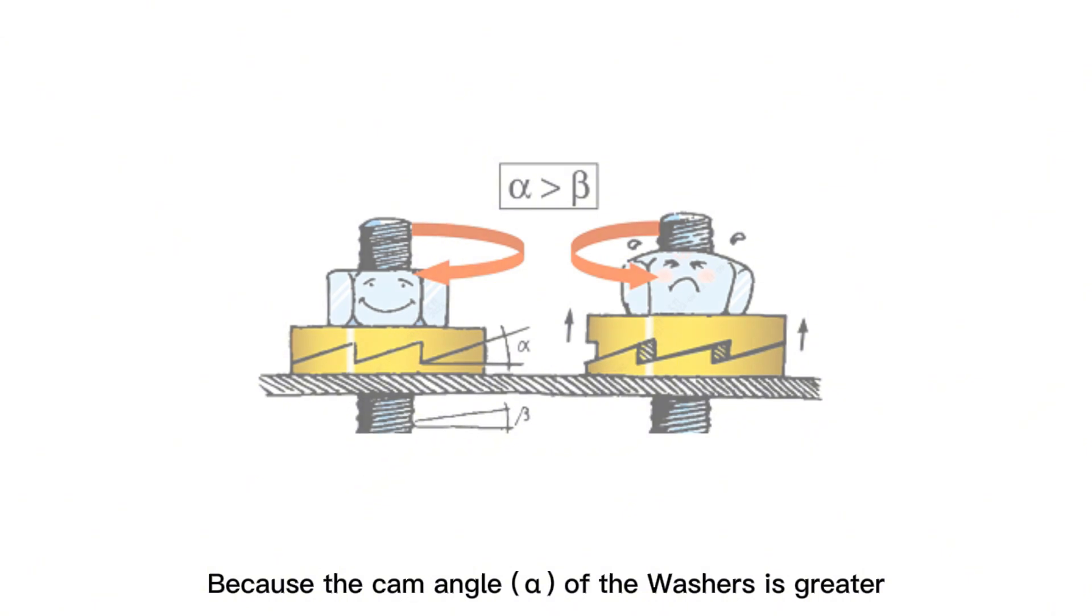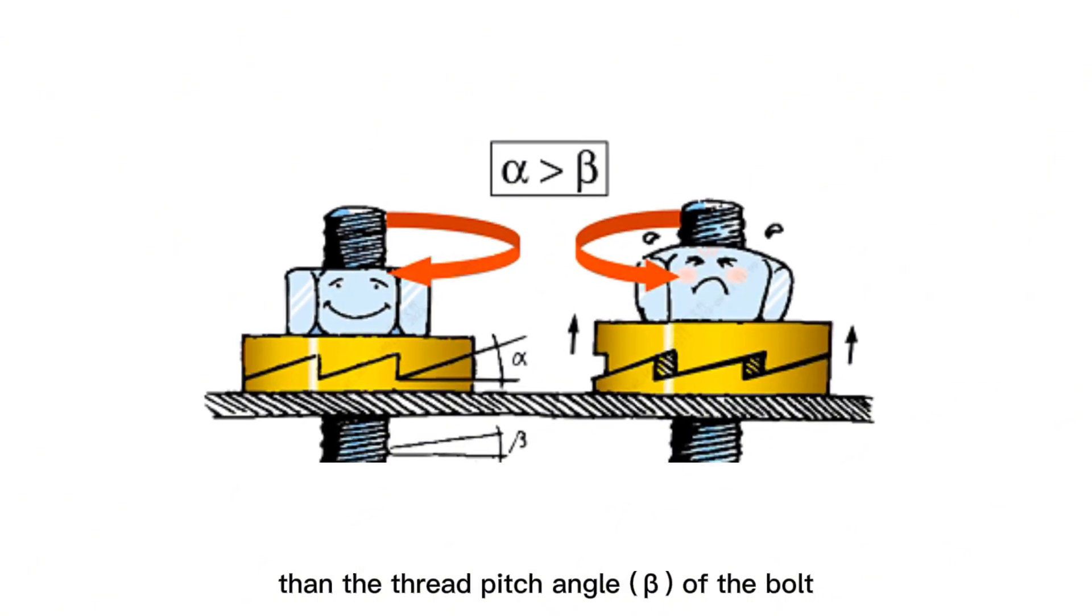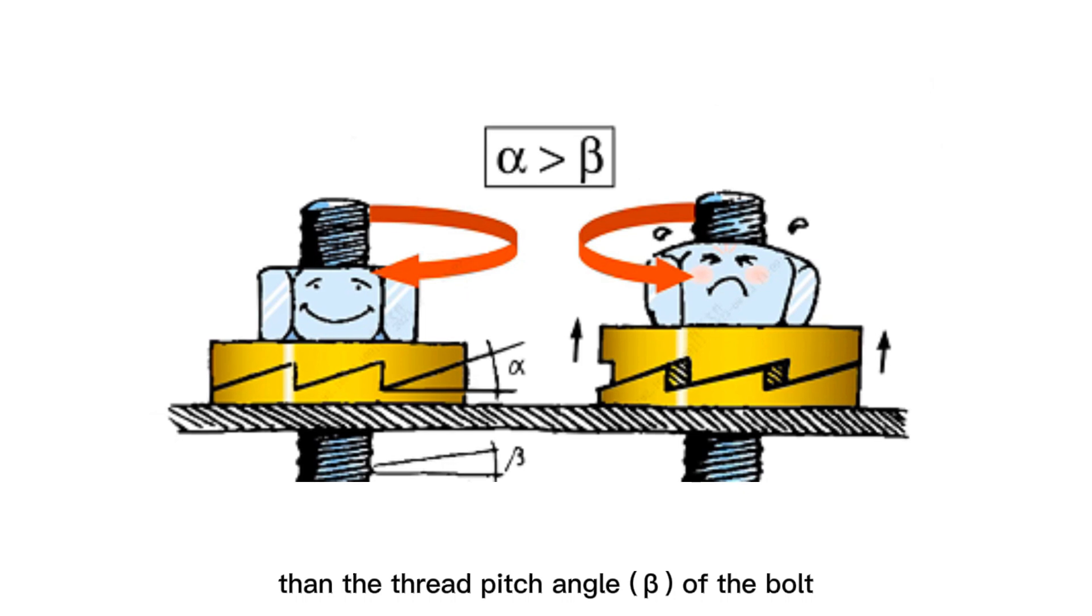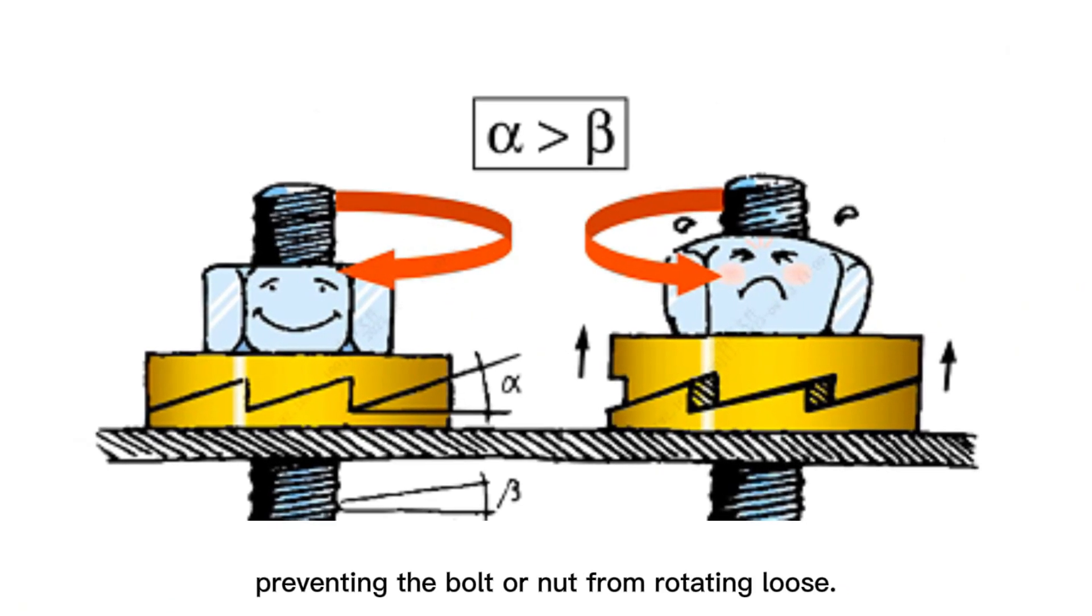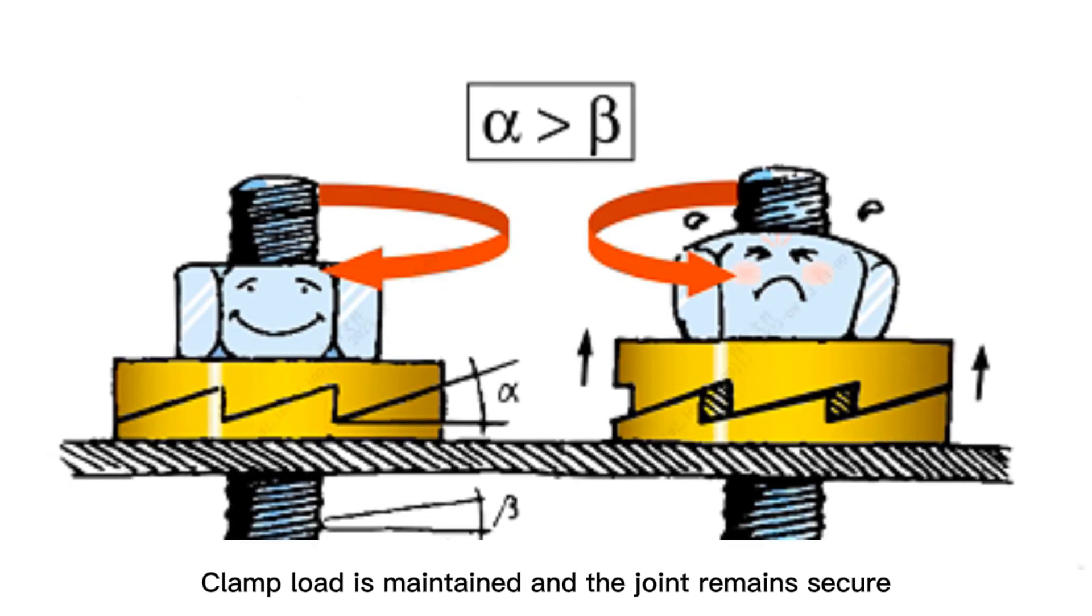Because the cam angle (α) of the washers is greater than the thread pitch angle (β) of the bolt, a wedge effect is created by the cams, preventing the bolt or nut from rotating loose. Clamp load is maintained and the joint remains secure.